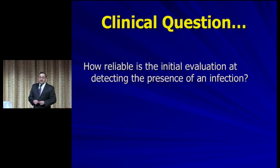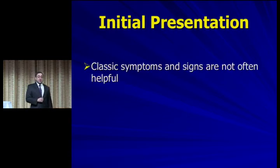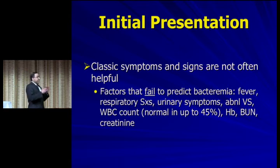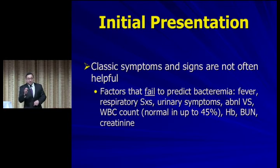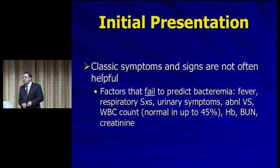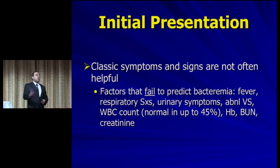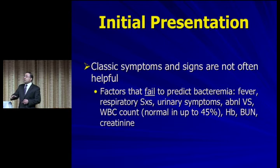How reliable is the initial evaluation in detecting infection? Classic symptoms and signs are not always very helpful. All of the following have been found to fail at predicting bacteremia: fever, respiratory symptoms like cough, urinary symptoms like dysuria and frequency, abnormal vital signs (with the exception of tachypnea), and white count — which can be normal in up to 45% of elderly patients with bacteremia. Never rely on a white count to rule in or rule out a dangerous infection. The white count is the last refuge of the intellectually destitute.